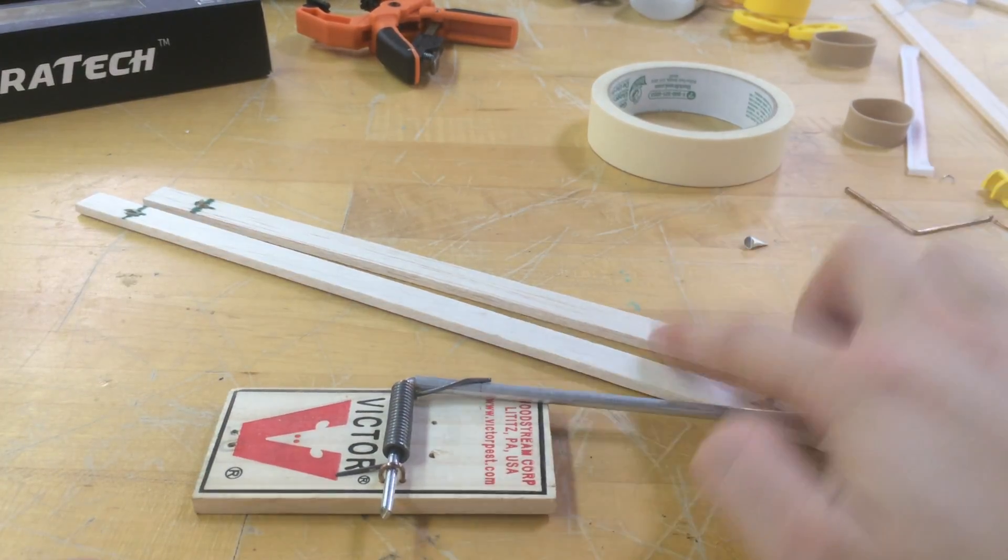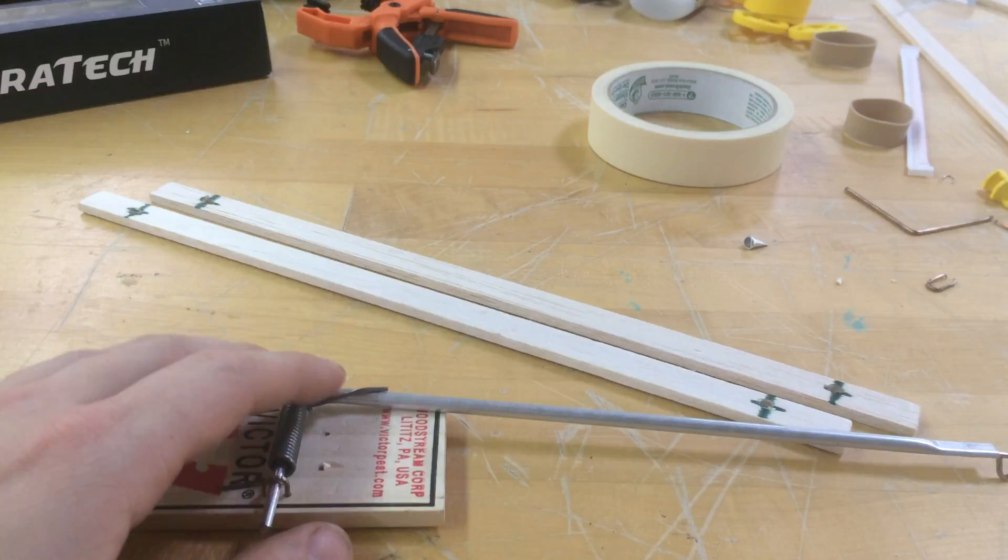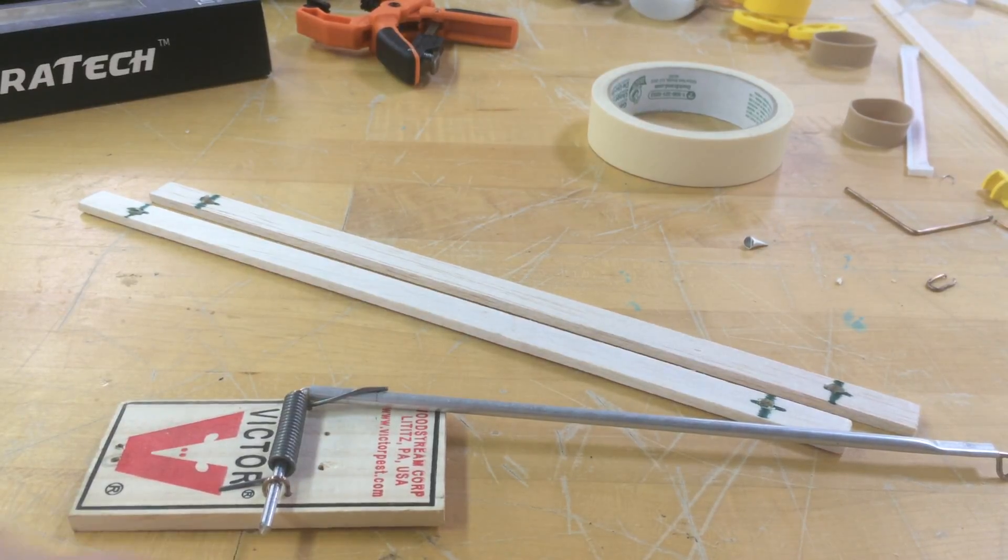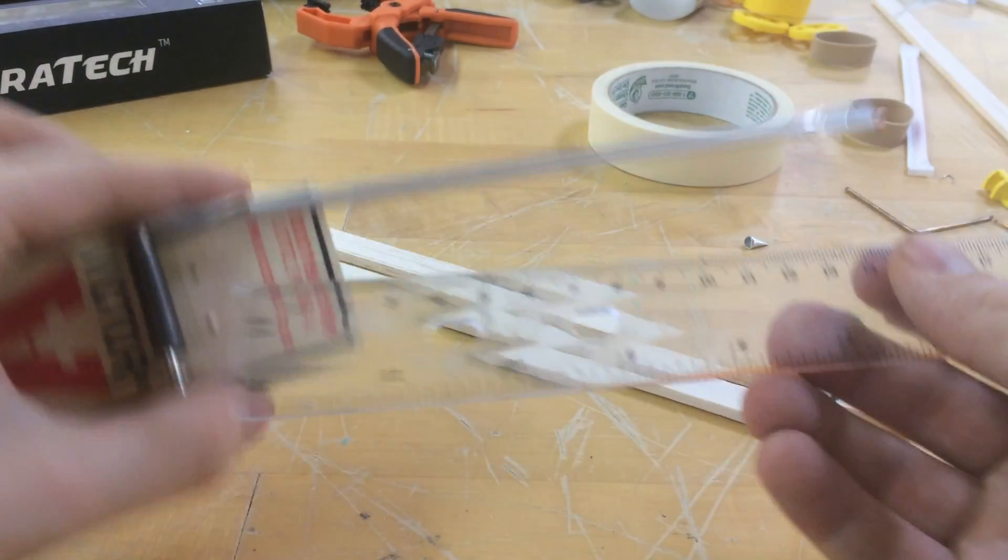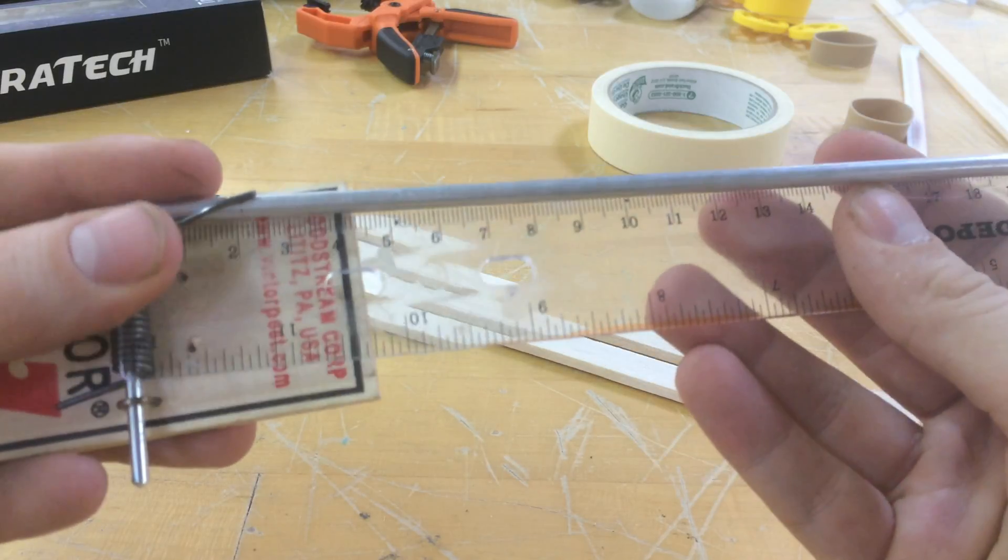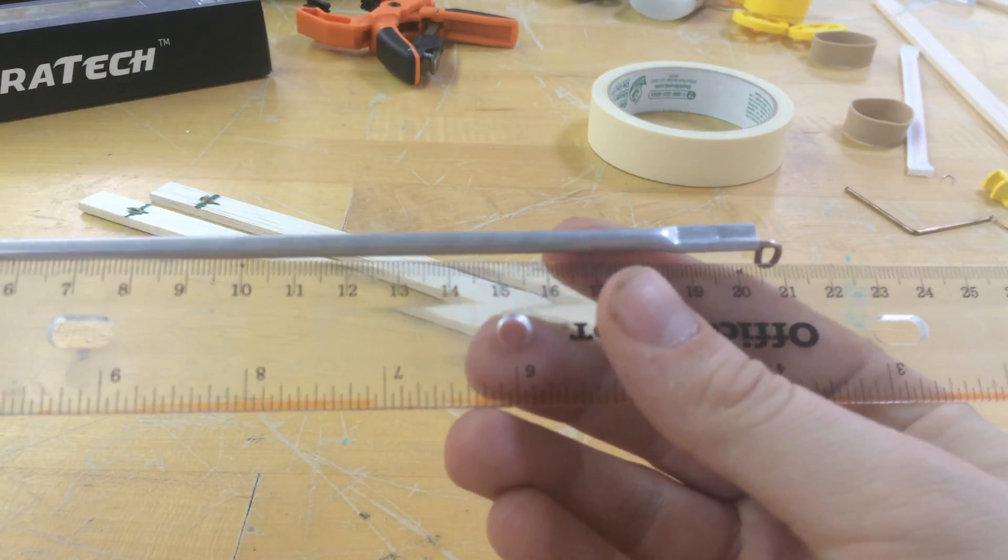The next thing we have to figure out is where this mousetrap goes on our rails. So in order to do that, we have to measure from the center spring all the way to the back hook.